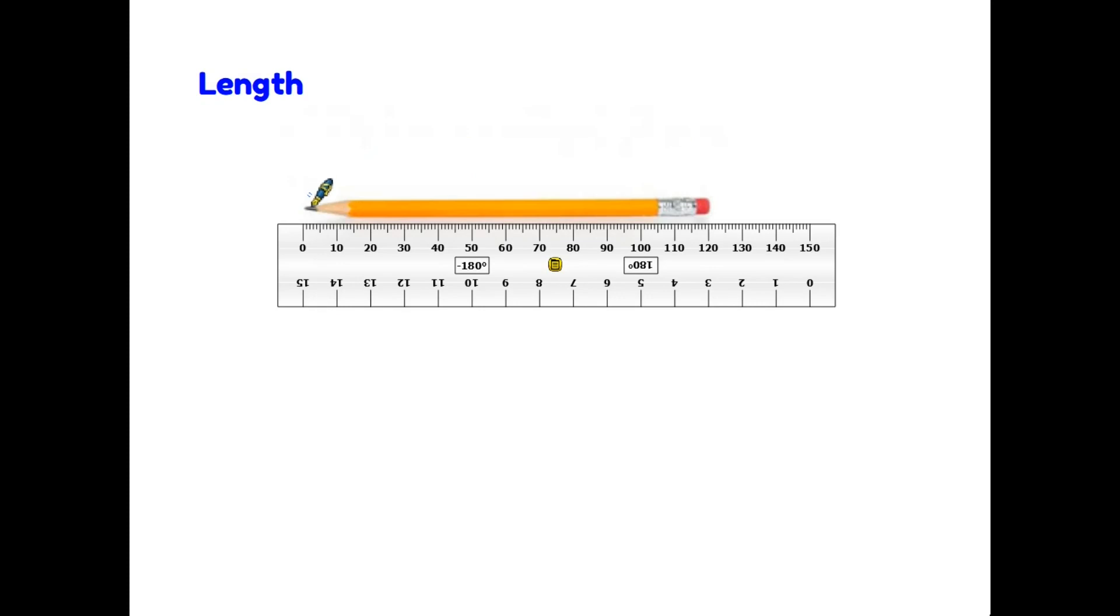So if you want to measure something, such as this pencil for instance, then you place it alongside the ruler. You make sure that one end starts exactly on the zero and measure along the scale. We can see in this case that this pencil is 120 millimetres or 12 centimetres.